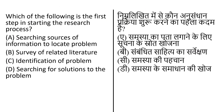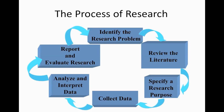Which of the following is the first step in starting the research process? The options are: (A) researching sources of information to locate a problem, (B) survey of related literature, (C) identification of the problem, and (D) searching for the solution to the problem. If we look at the research process, the first step is to identify the research problem.